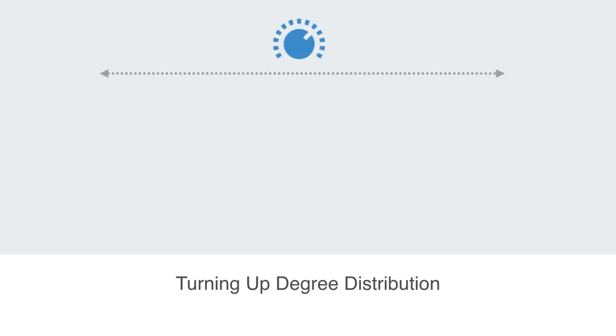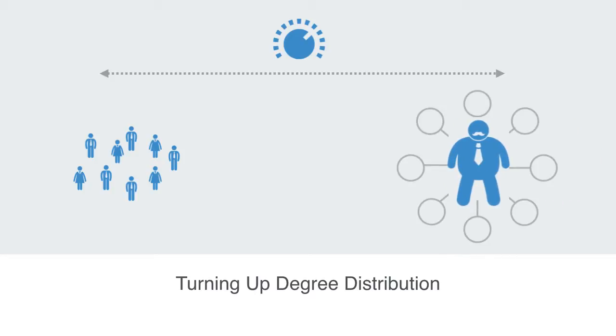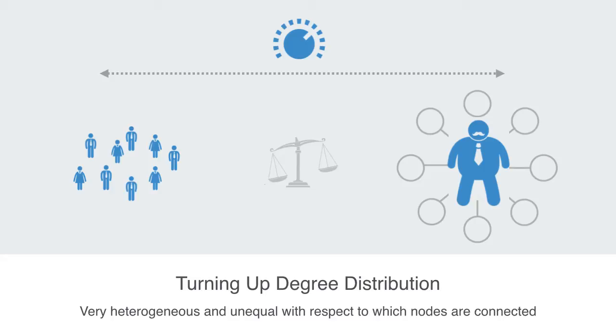Continuing with our theme of degree distribution in networks, centralized networks represent networks with a very high degree distribution. In this type of network structure, there will be very many nodes with a very low level of connectivity, and very few or maybe just one node with an exceptionally high degree of connectivity. Thus they are very heterogeneous and unequal in terms of how connected and influential the different nodes in the network are.